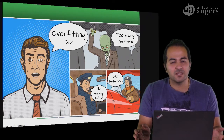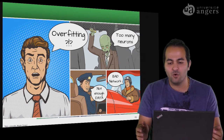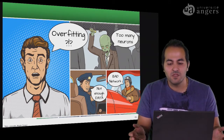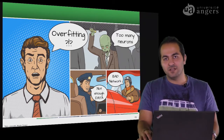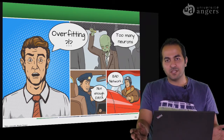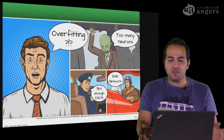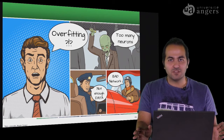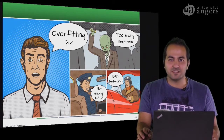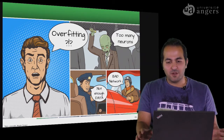Is our network a bad design, or do we use too many neurons, or is our data not enough? Based on this question, we can say that since we are using the MNIST database, which is a good database from the size point of view, we don't have the data problem.